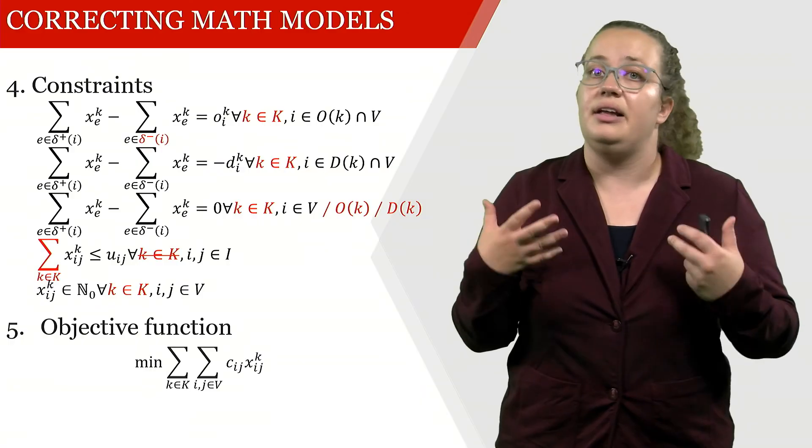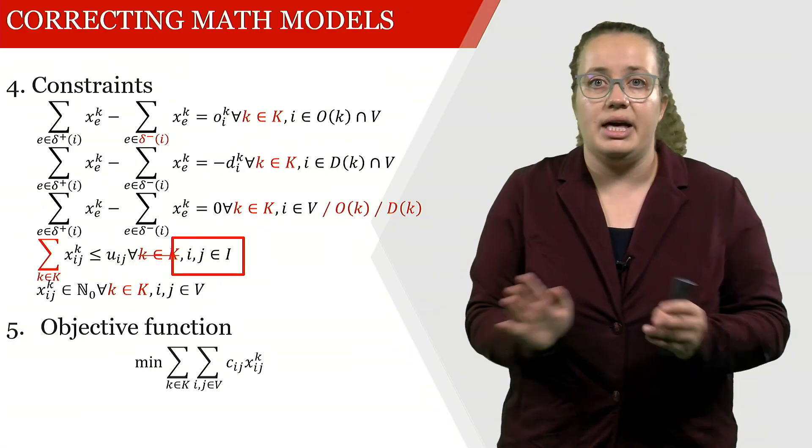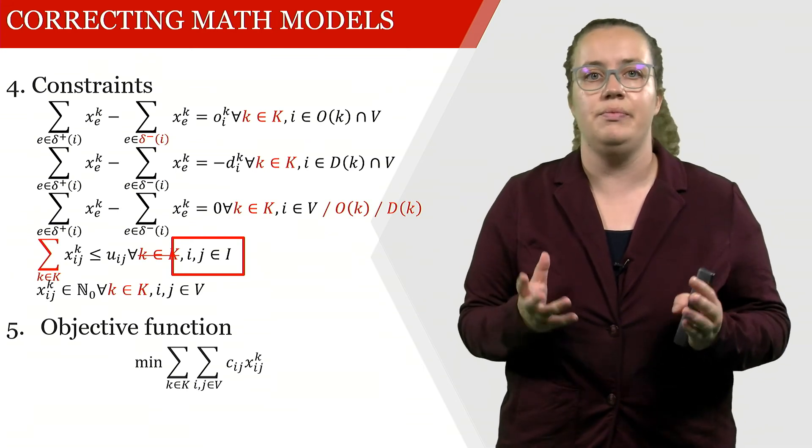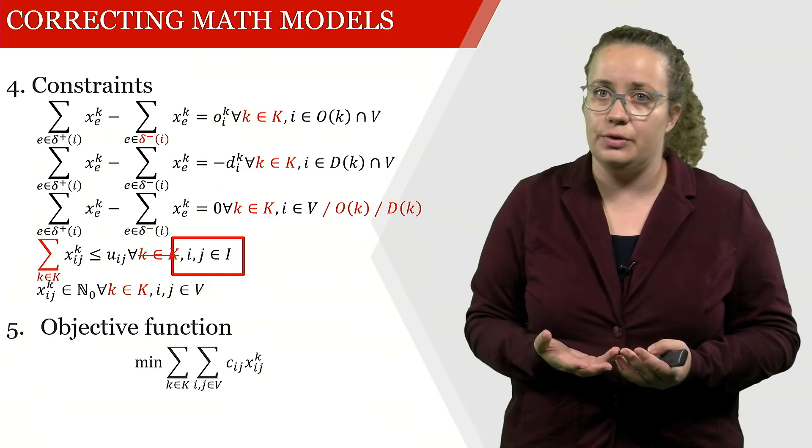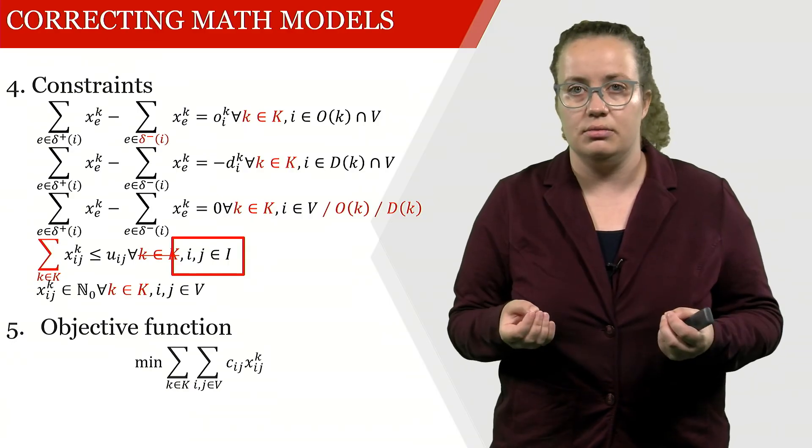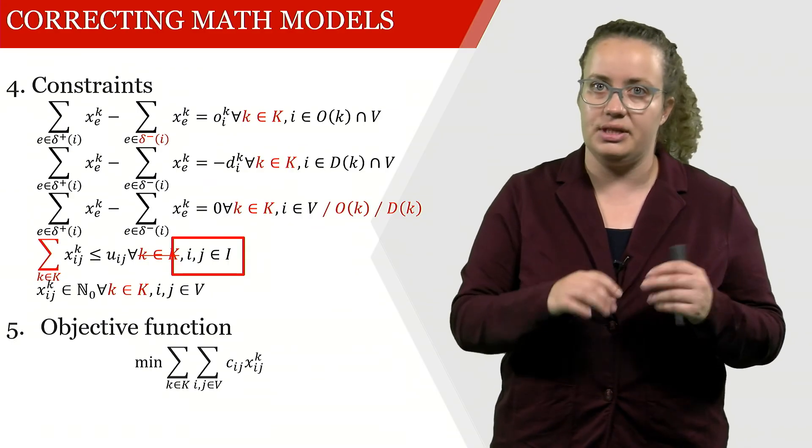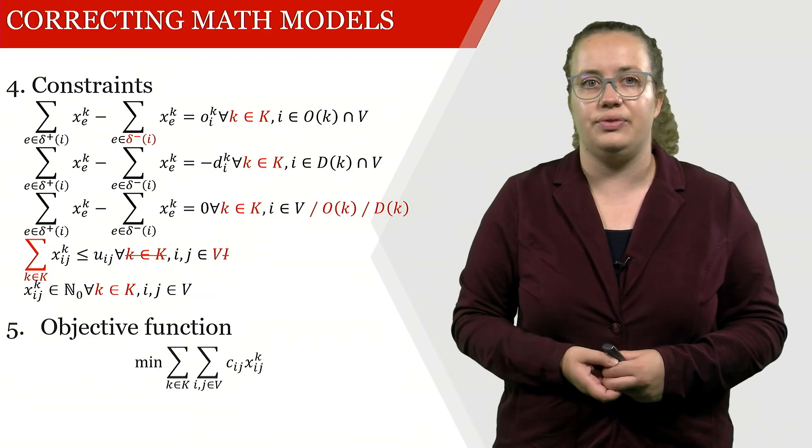And then the last mistake in this mathematical model is actually this. I have no idea what is standing in this for all part. I've never heard of the set I. But if I'm looking at this constraint, my assumption would be that we're talking about the set of locations. If we're talking about the set of locations, then we remember from the previous slide that this is V. And so we have to exchange that for V.